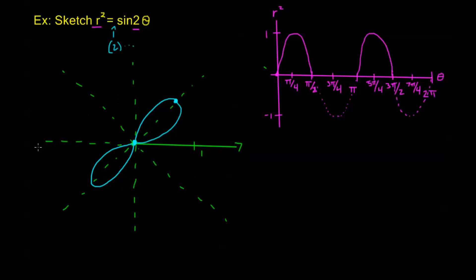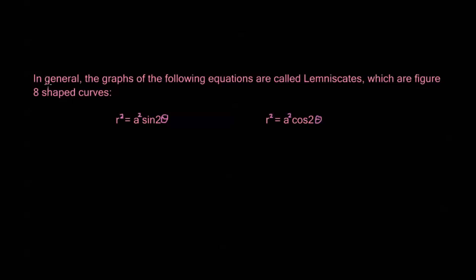We have this little figure-eight looking graph and what we call this is a lemniscate. In general, the graphs of the following equations are called lemniscates and they're always going to be these figure-eight shaped curves. We're looking at r squared equals a squared sine 2 theta and r squared equals a squared cosine 2 theta. We write it in the form a squared because if we had something like 2 here, we'd write it as square root of 2 squared — since on our polar graph we're not going to go all the way up to 2, only to root 2. We'll see another example of a lemniscate without a coefficient of 1 in the upcoming practice videos.